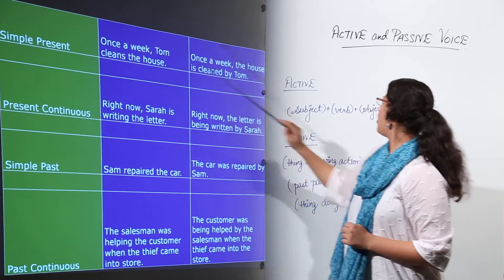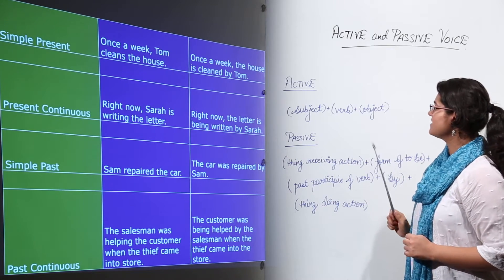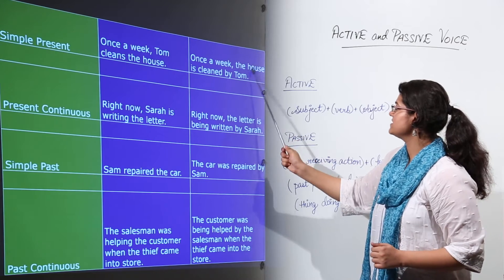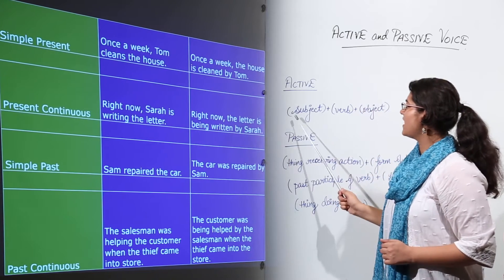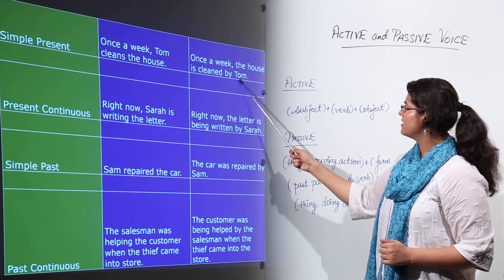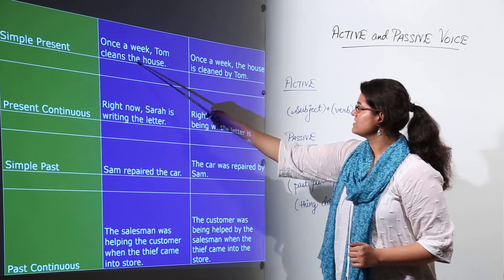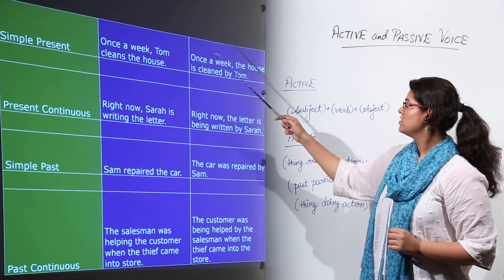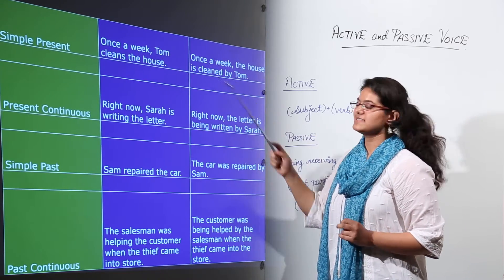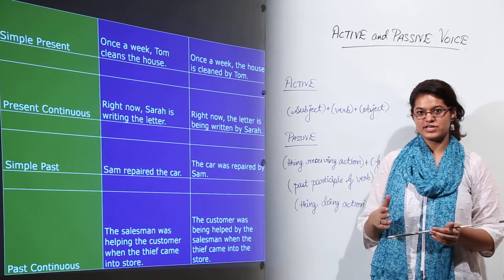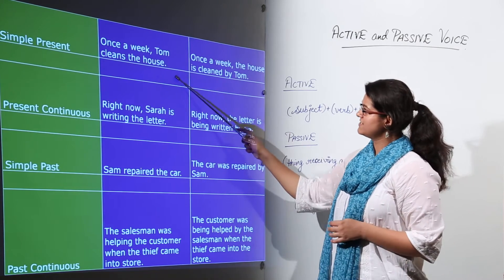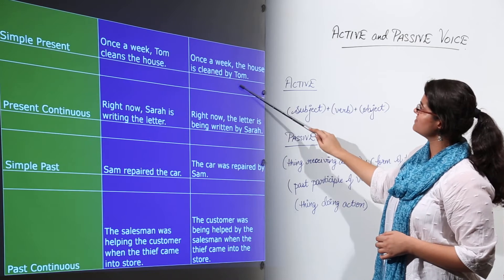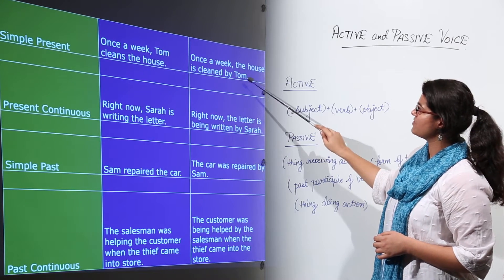The house is the object in active voice, the thing receiving the action, so it becomes the subject in passive voice. Tom, which is the subject in active voice, becomes the object here. 'Cleans' uses the past participle, becoming 'is cleaned.' 'Once a week' remains as it is since it's additional information. So 'Once a week Tom cleans the house' becomes 'Once a week the house is cleaned by Tom.'